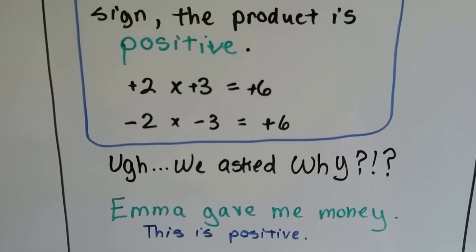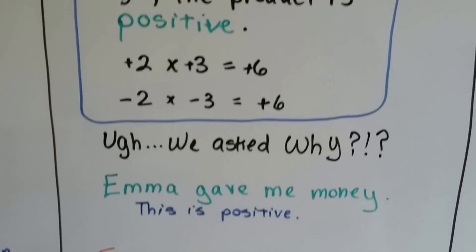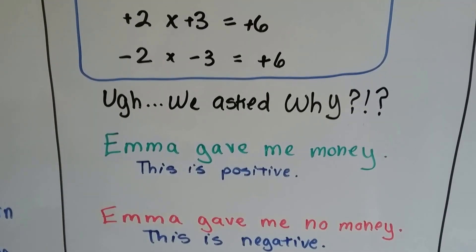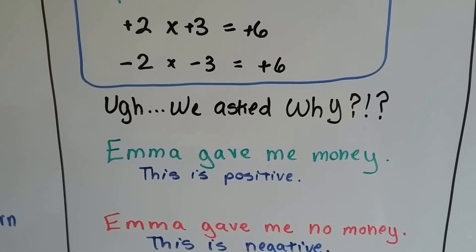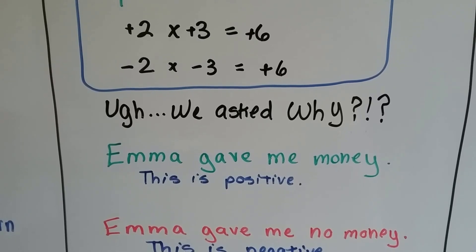Alright, Emma gave me money. That's pretty positive, right? If Emma gave you money, that would be a positive thing, right? Okay, Emma gave me no money. Well, that's kind of negative. That means I got zero, I got nothing, right? It's negative.